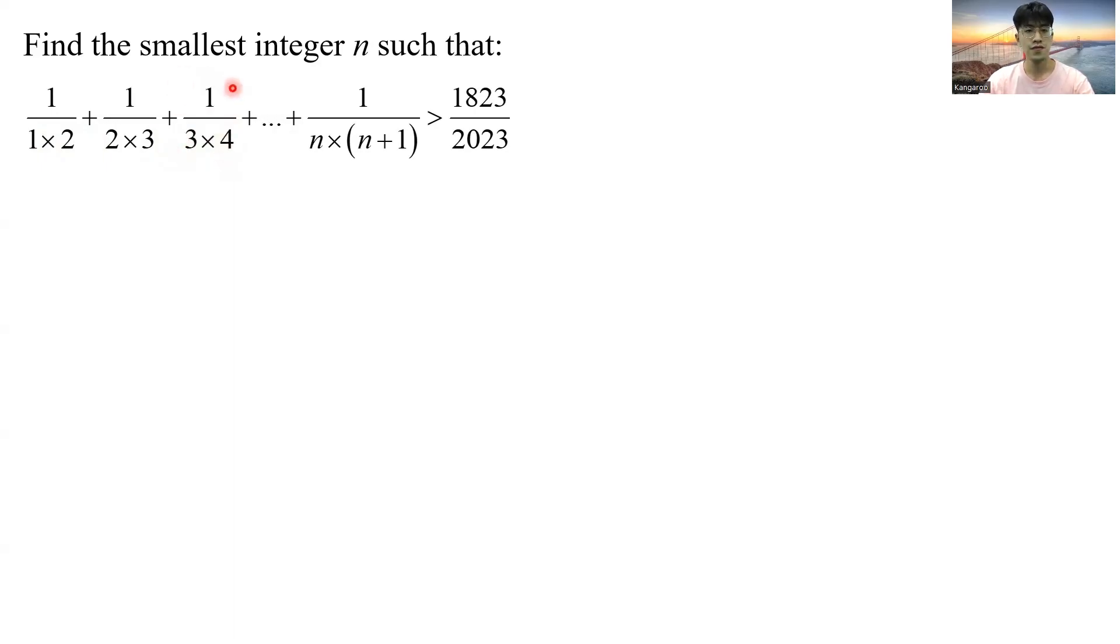So for example, for this fraction 1 over 3 times 4, the numerator just so happened to be the difference between 4 and 3. I can rewrite this fraction, I can split it into two easier fractions as 1 over 3 minus 1 over 4.